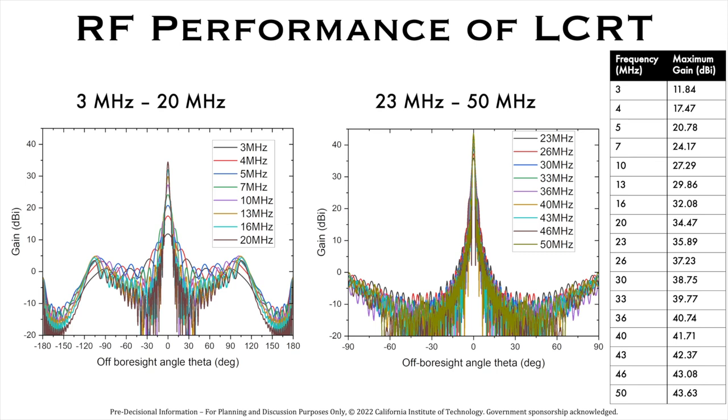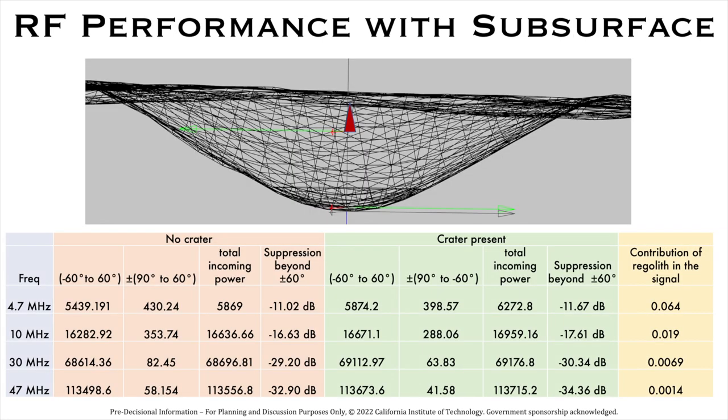Finally, putting it all together, this slide shows the RF performance of LCRT over all wavelengths. Next, the RF performance of LCRT is perturbed using subsurface regolith models. Note that at the smallest frequency of 4.7 MHz, lunar regolith contributes up to 6% of the signal.